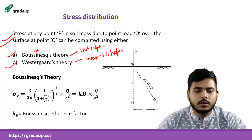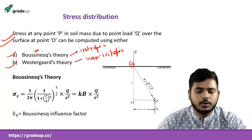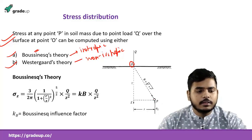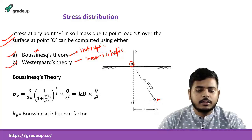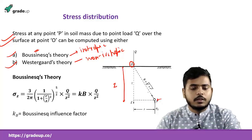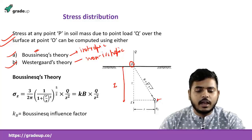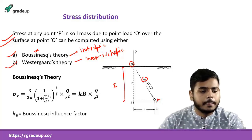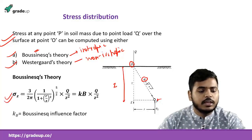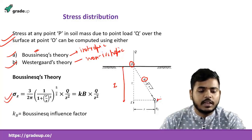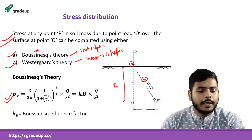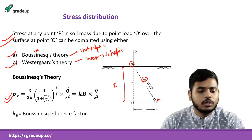If a point load Q is applied on the surface at point O, we have to find the stress at point P. Point P is located at a radial distance R from the perpendicular and at a depth Z. The distance to P is √(R² + Z²) by Pythagoras. Boussinesq gave the vertical stress formula as: σz = (3/2π) × [1 / (1 + (R/Z)²)^(5/2)] × (Q/Z²).